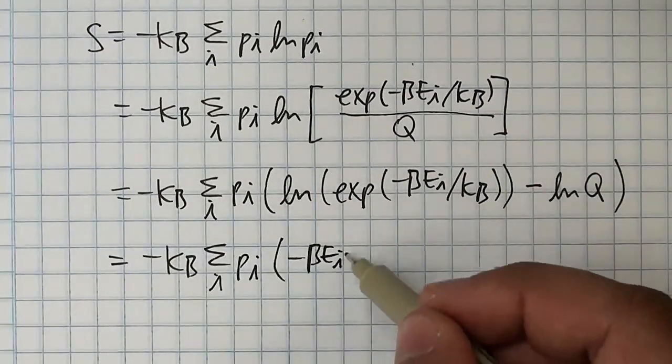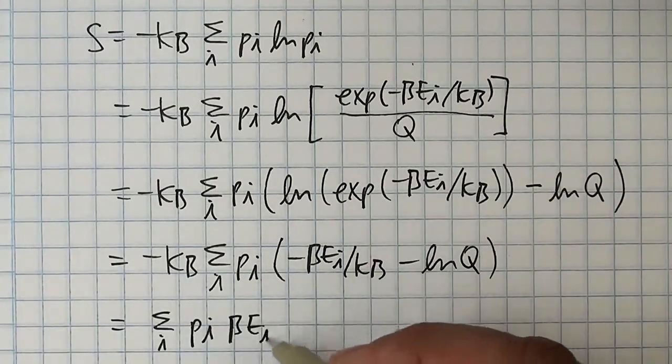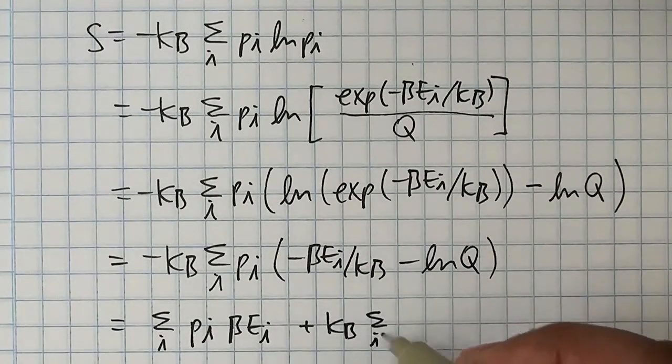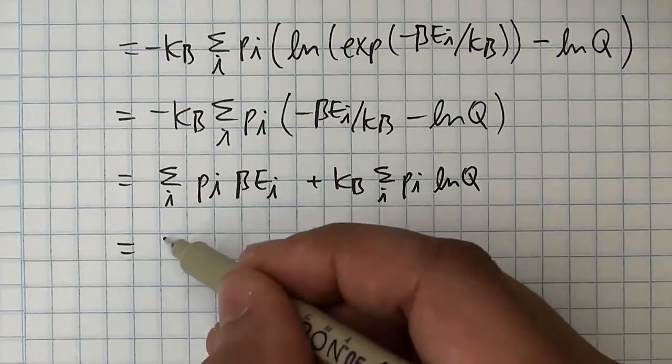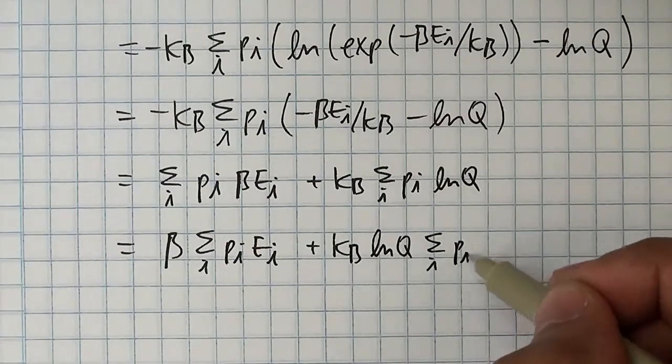Of course, the log and the exponential are inverse operations, and so we can simplify this. What we're left with is just the expected value of beta times ei, and k times the expected value of log q.